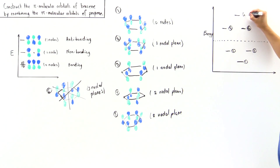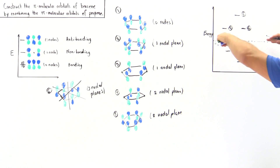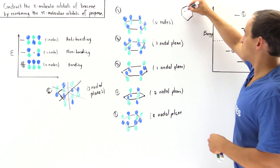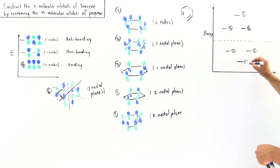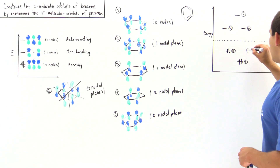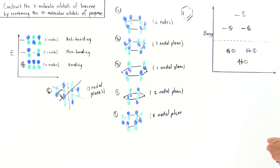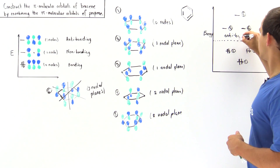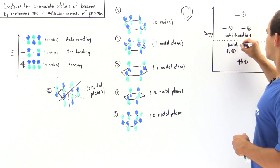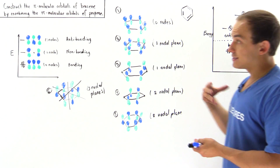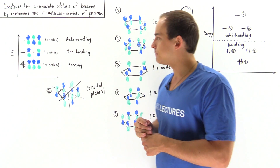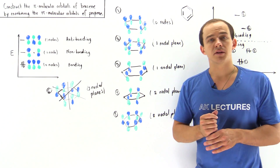The line separating bonding from anti-bonding shows that in the benzene molecule we have three pi bonds, giving a total of six electrons in the pi system. All six electrons fill the bonding, stable, low-energy orbitals — π1, π2, and π3 — while the anti-bonding orbitals remain unfilled because they are too high in energy and unstable. This concludes our example: these are the six pi molecular orbitals of benzene, built from the three types of pi molecular orbitals of propene.